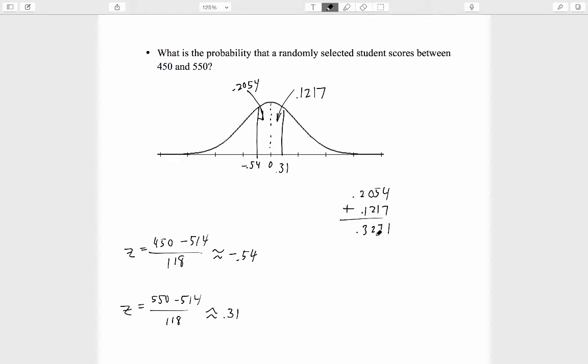There is almost a 33% chance, there is almost a one-third chance that a score will fall somewhere in this 100-point range, a fairly substantial probability considering that this is only a 100-point range.